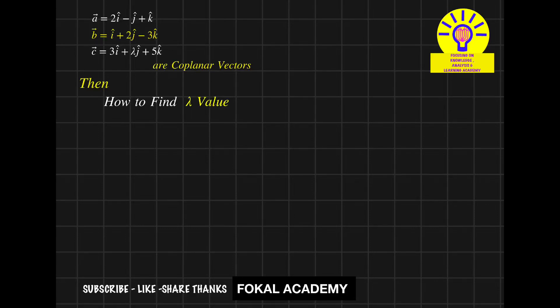Hi everyone, welcome to Focal Academy. In this problem, three vectors A, B, and C are said to be coplanar vectors. We need to find the lambda value. In vector C, one value is missing — that is lambda, the coefficient of J. So how can we find this value?